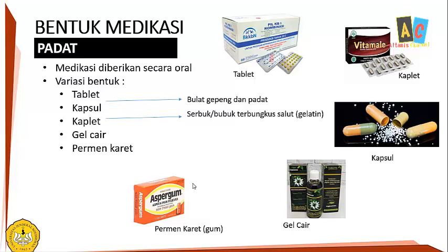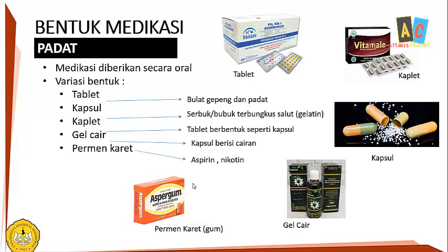Kapsul berisi serbuk. Kaplet adalah tablet yang bentuknya seperti kapsul, bulat lonjong tapi keras seperti tablet. Gel cair adalah kapsul berisi cairan, contoh yang paling gampang misalkan Habatus Sauda dalam sediaan cair yang dibungkus seperti kapsul, tapi isinya cairan bukan serbuk. Permen karet misalkan aspirin atau nikotin.